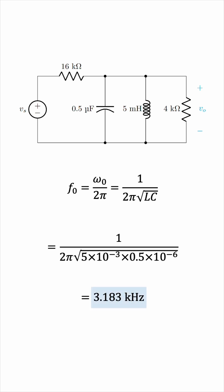Notice that the values of the resistors in this problem are irrelevant. The frequency that maximizes the amplitude of the output voltage is the resonant frequency, which only depends on L and C.